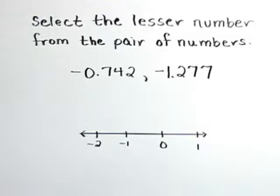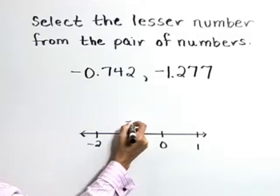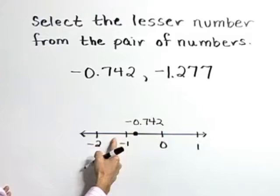I'd like to consider these numbers on a number line type of graph. Negative 0.742 is between 0 and negative 1 on the number line, while negative 1.277 is between negative 1 and negative 2 on the number line.